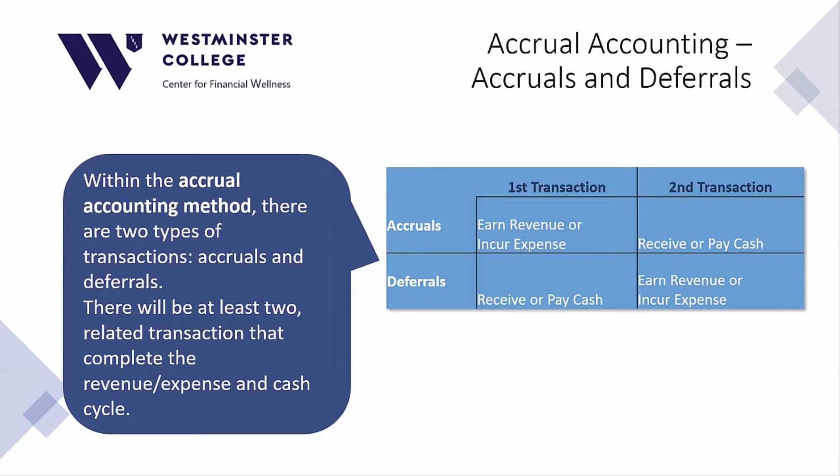Because a business activity can now be split into at least two accounting transactions, we need to think about which activity comes first: the earnings process or the exchange of cash. Within accrual accounting, there are two types of transactions — they're called accruals and deferrals.